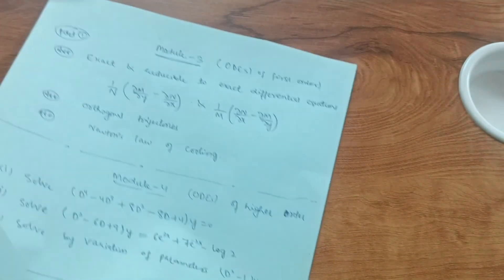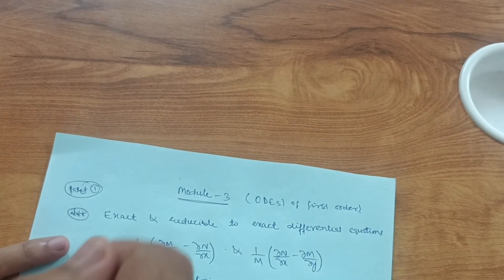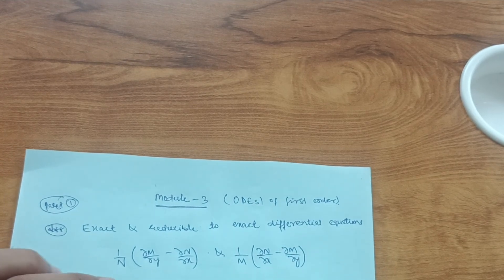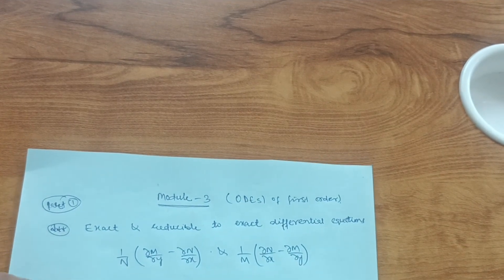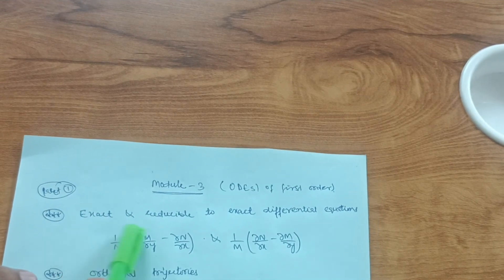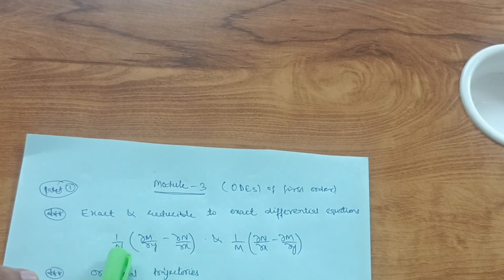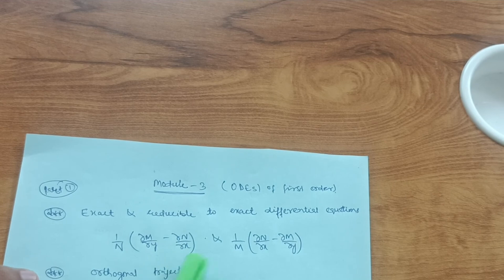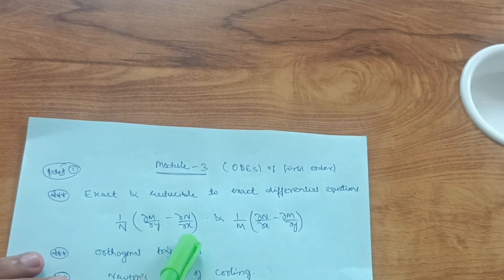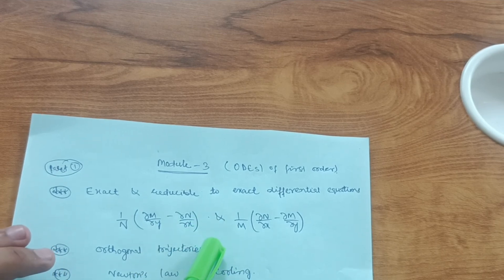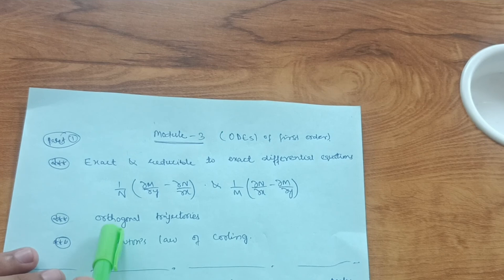Module 3 covers ordinary differential equations of first order, which you may have come across in PU classes. The most important and simple topic is exact and reducible-to-exact differential equations, where you use the formulas (1/N)(∂M/∂y − ∂N/∂x) and (1/M)(∂N/∂x − ∂M/∂y) to find integrating factors. Try three to four problems from this concept and you will easily get seven marks.